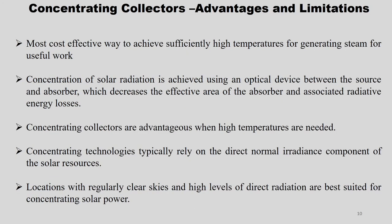Concentrating collectors are the most cost-effective way to achieve sufficiently high temperatures for generating steam for useful work. They are normally used for high-temperature solar power plant applications. Concentration of solar radiation is achieved using an optical device between the source (the sun) and the absorber (the collection device), which decreases the effective area of the absorber and associated radiative and convection losses.